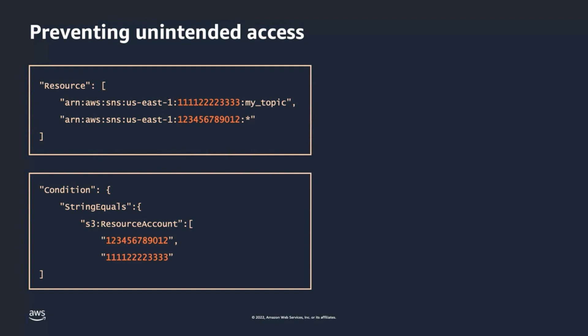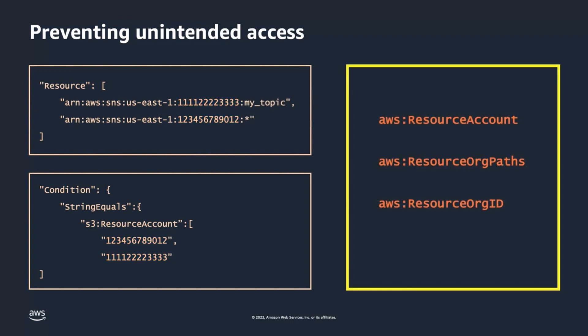Notice that in both cases, you have to individually list account IDs in the resource or condition element of the policy in order to identify resources that belong to your trust boundary. Even though that allows you to meet the requirement of restricting access to trusted resources, this approach presents scaling challenges for organizations with many accounts created dynamically on a regular basis. Alternatively, you can use IAM global condition keys such as AWS Resource Account, AWS Resource Org Path, and AWS Resource Org ID, which consistently apply to all AWS services that support them and can be implemented at an organization level.